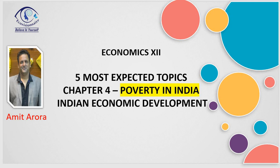Today we have Chapter 4. It is part of Unit 2. In Unit 2 we have 6 chapters of 22 marks. 22 marks is the most important unit, and the first chapter is Poverty in India.